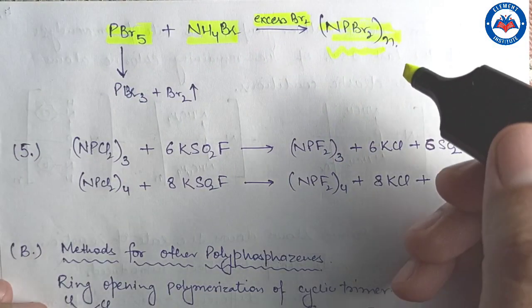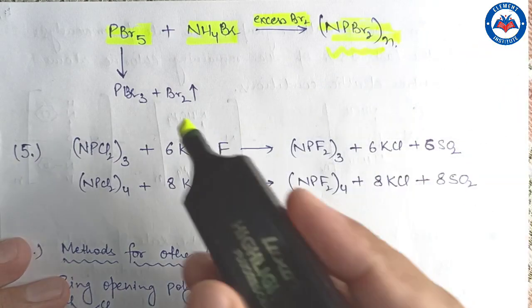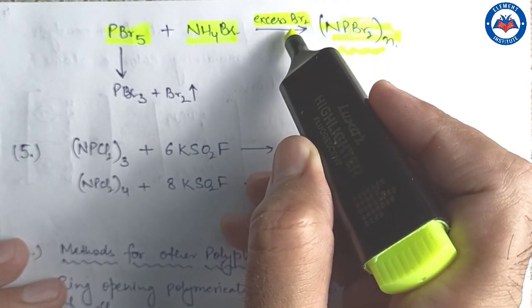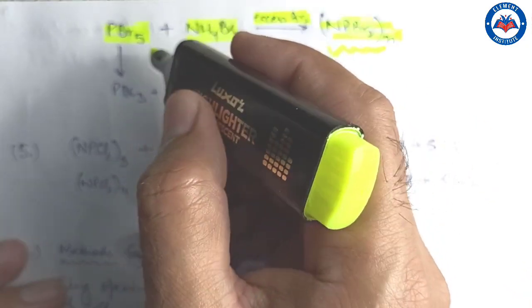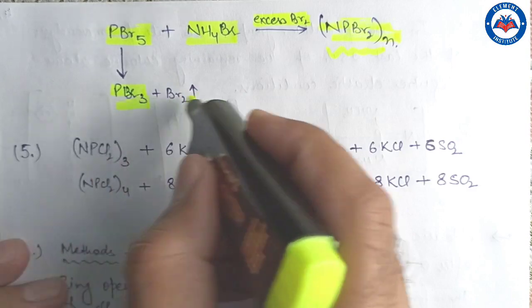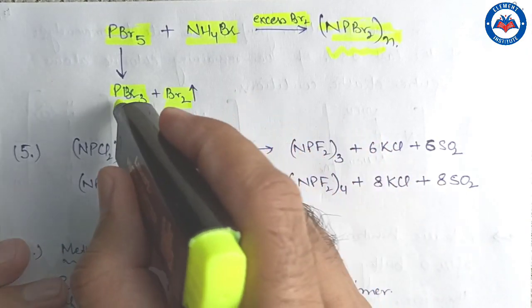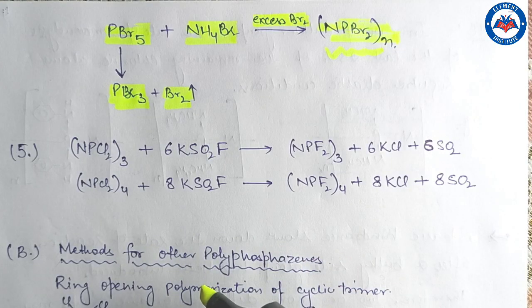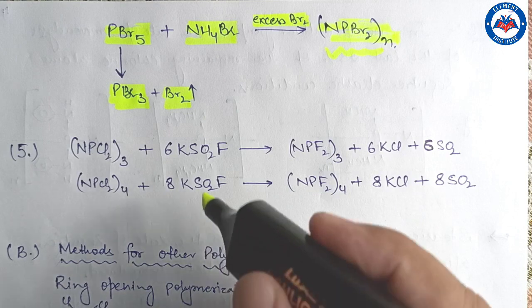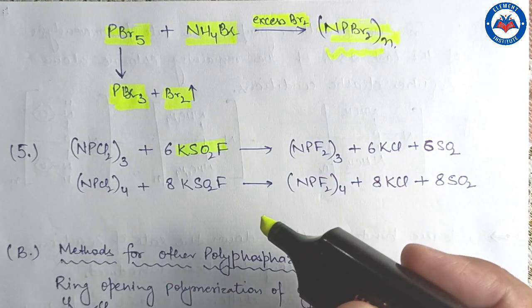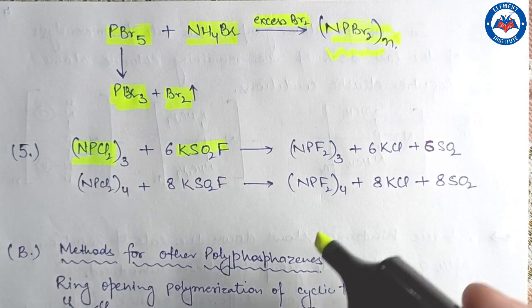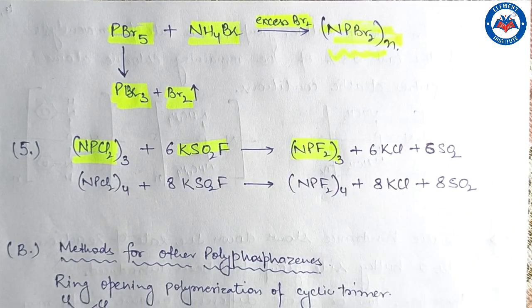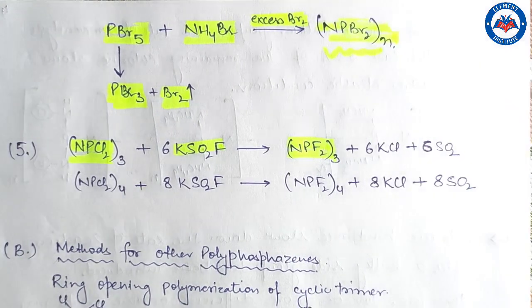Phosphonitrilic bromides can be prepared by the reaction of phosphorus pentachloride and ammonium bromide in the presence of excess bromine. Since phosphorus pentabromide is unstable and may decompose, excess bromine is used to compensate for the loss. Phosphonitrilic fluorides are prepared by the action of potassium fluoride on the halogen derivatives, leading to substitution of chloro or bromo groups with fluorine.